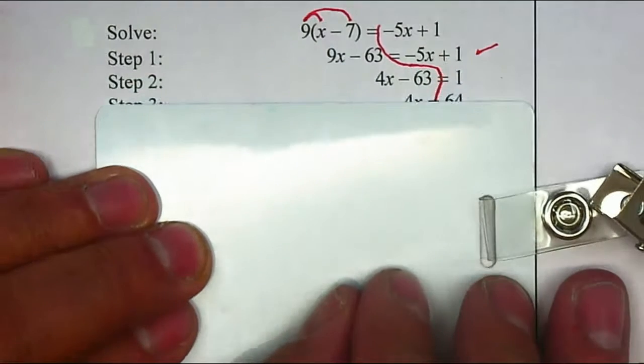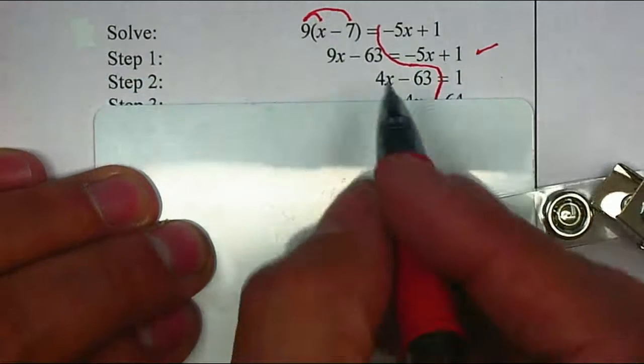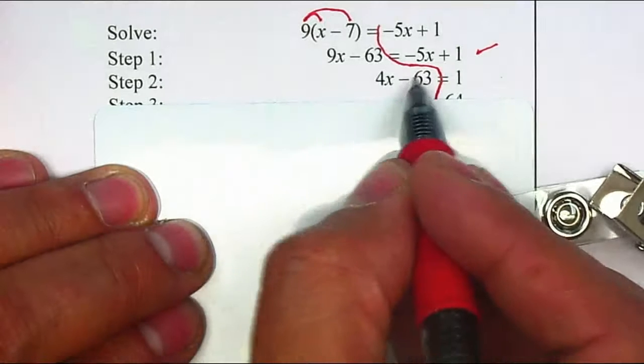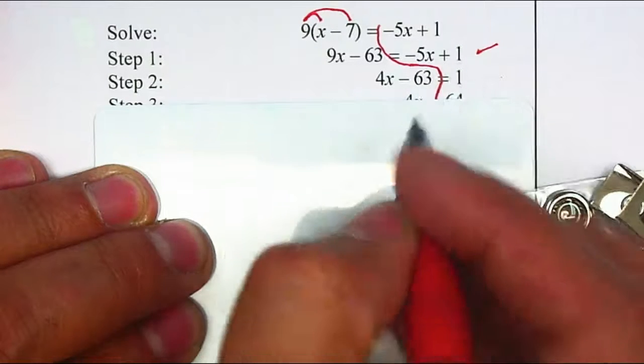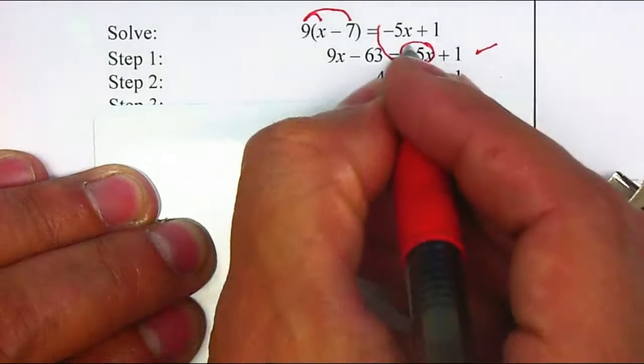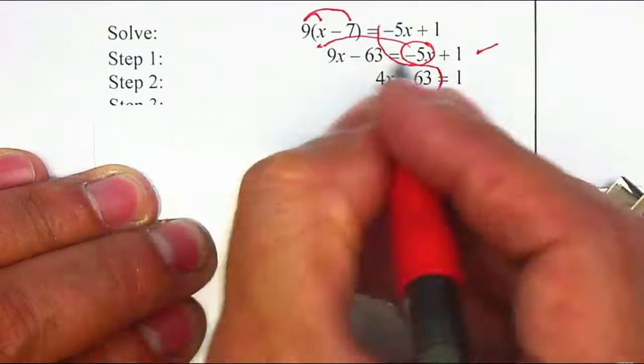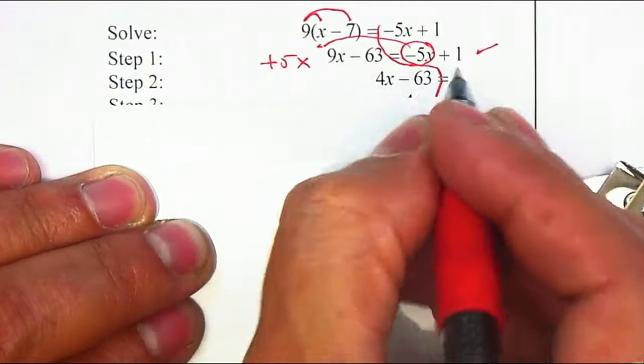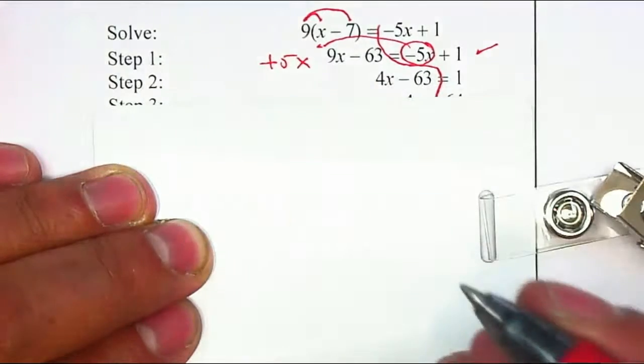Once you go to the next step, you have to ask yourself what is the difference between those two. Negative 63 is still there, negative 1 is still there. So basically, they moved the negative 5x to the left, and once they move it to the left, it becomes positive 5x. Or if you want to think about adding 5x on both sides, you can do that as well.